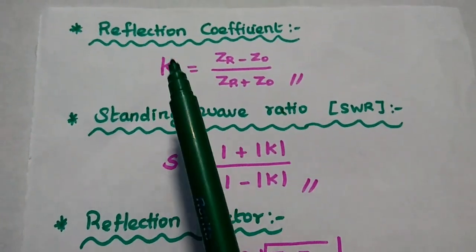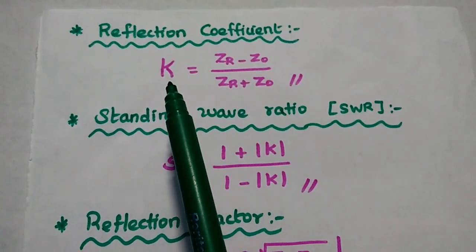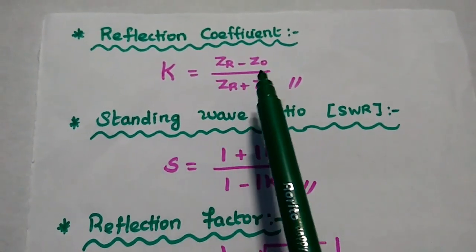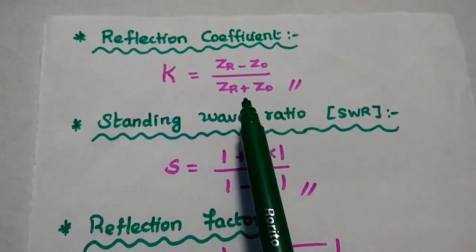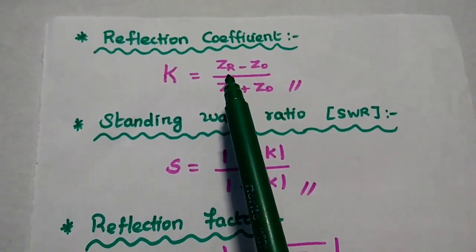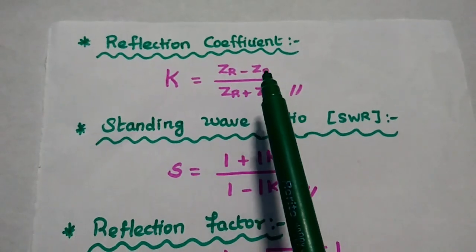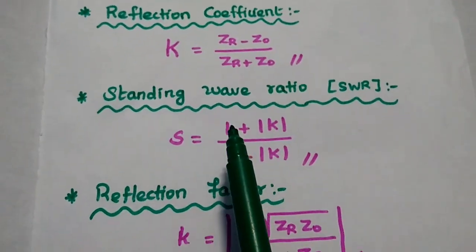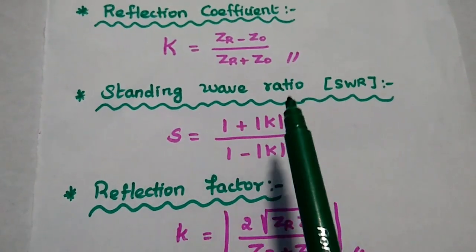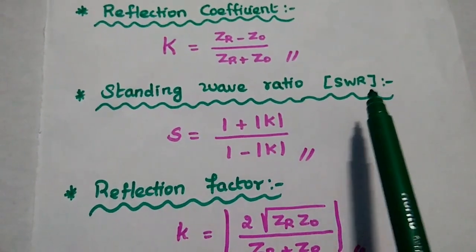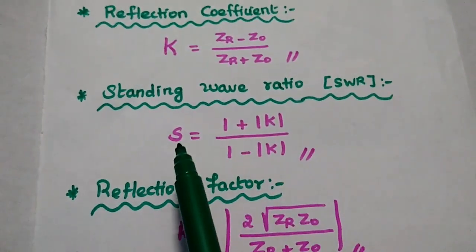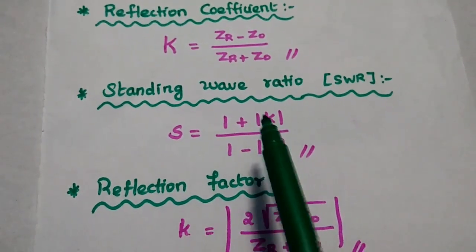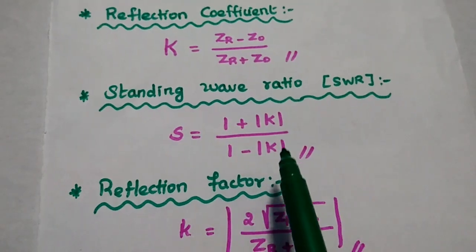The first formula is the reflection coefficient, represented as capital K, equal to ZR minus Z0 divided by ZR plus Z0. Here ZR represents the receiving end impedance and Z0 is the characteristic impedance. The next one is standing wave ratio, simply SWR, represented as capital S, equal to 1 plus modulus of K divided by 1 minus modulus of K.